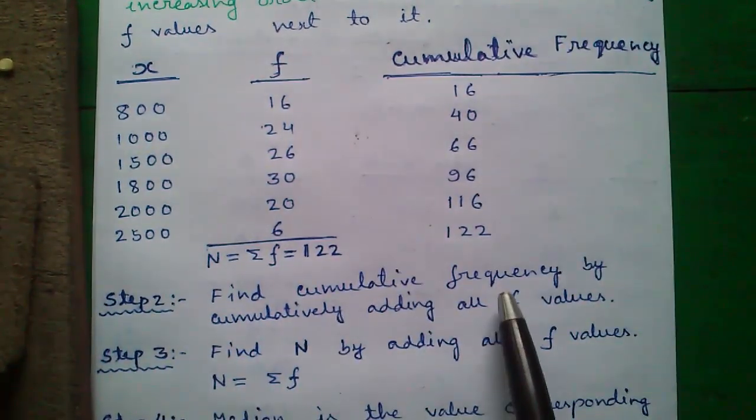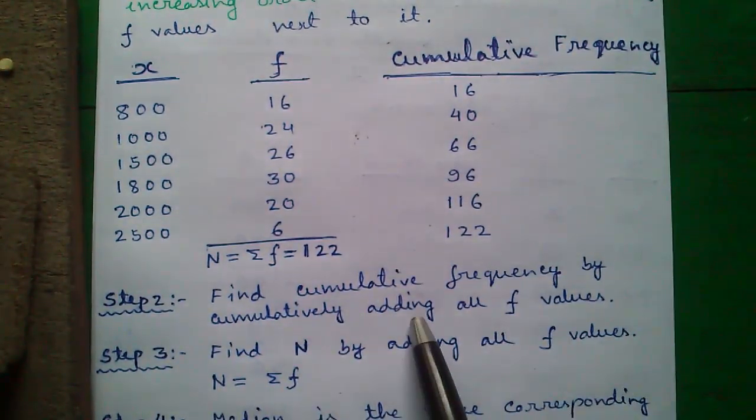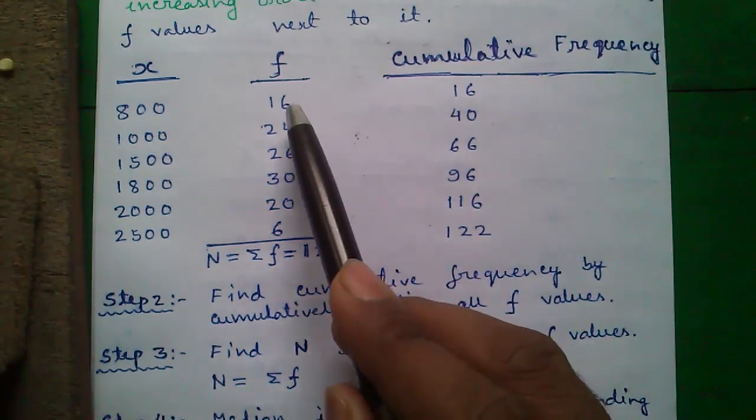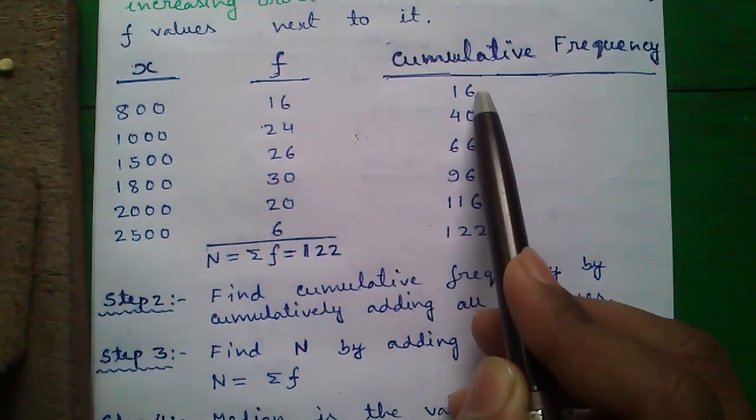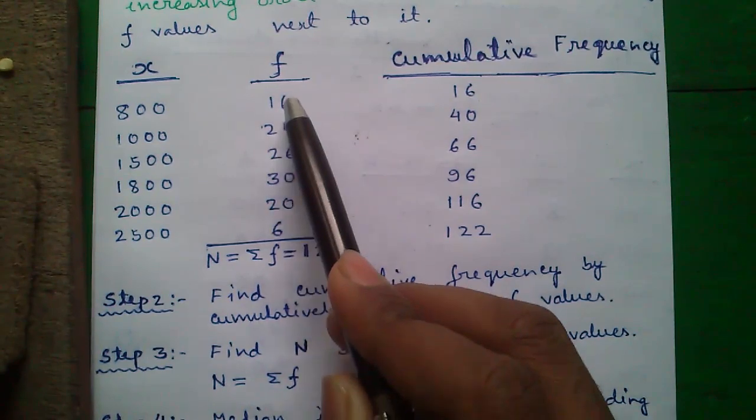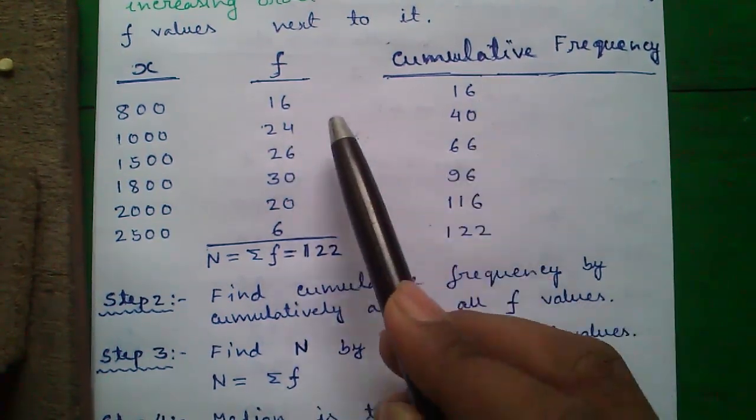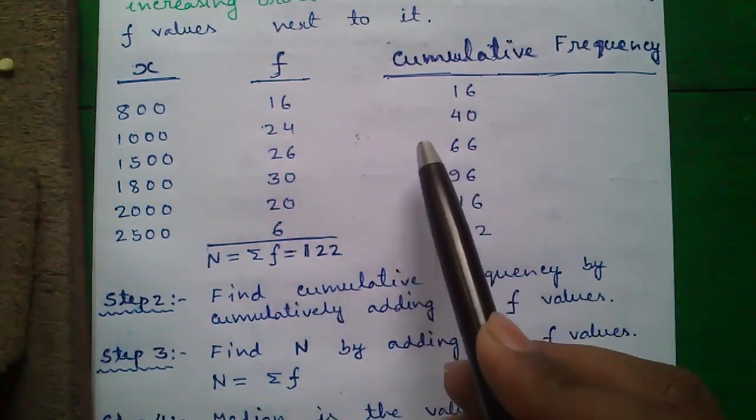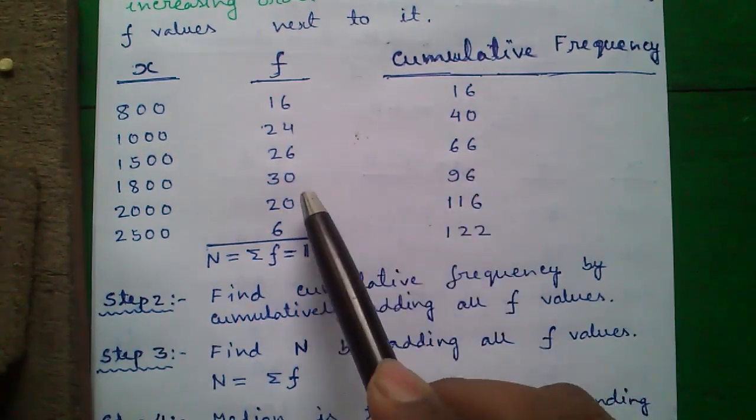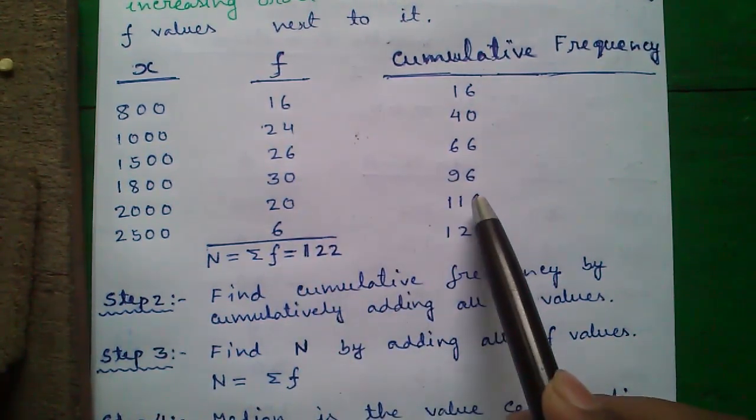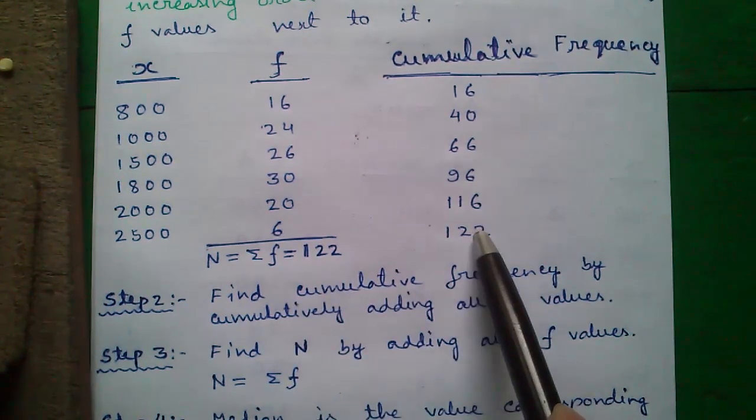Step 2. Find the cumulative frequency by cumulatively adding all F values. That means write the first F value 16 and then add 24 to it. So 16 plus 24 is 40. 40 plus 26 is 66. 66 plus 30 is 96. 96 plus 20 is 116 and 116 plus 6 is 122.